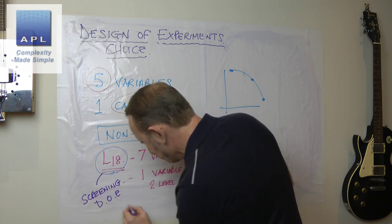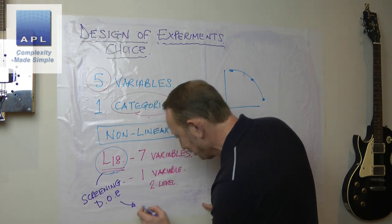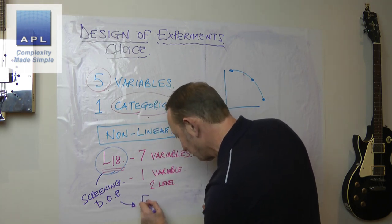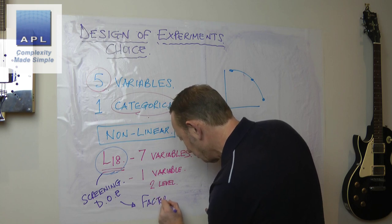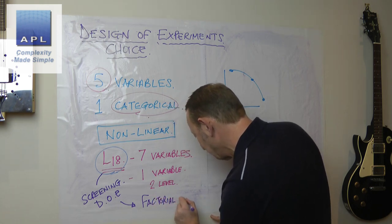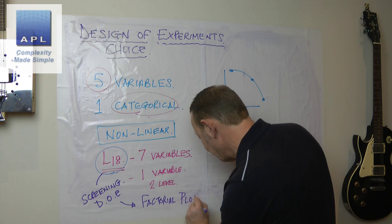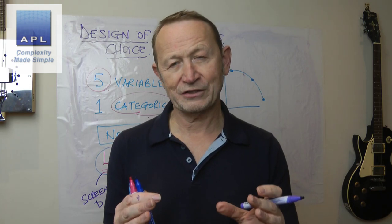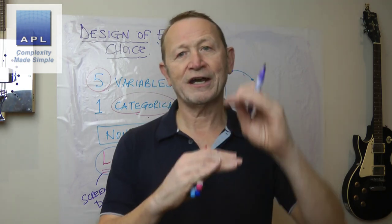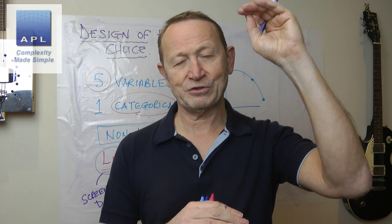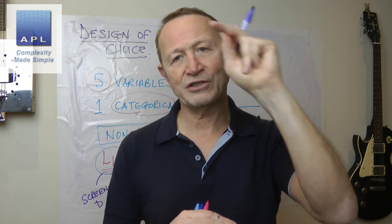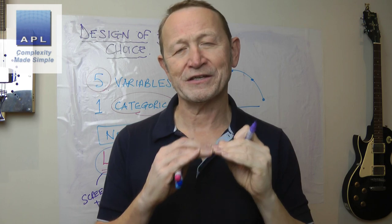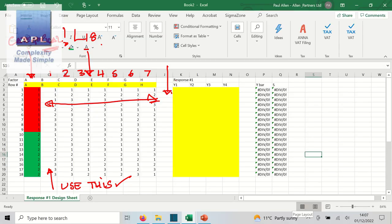Now, one last thing about the L18: it's really just a screening DOE. So when you do the analysis, you're going to use factorial or marginal means plots only. So it's a very simple analysis. As the name suggests, it's just 18 setups. I would repeat each setup twice, so I'd end up with a sample size of 36.